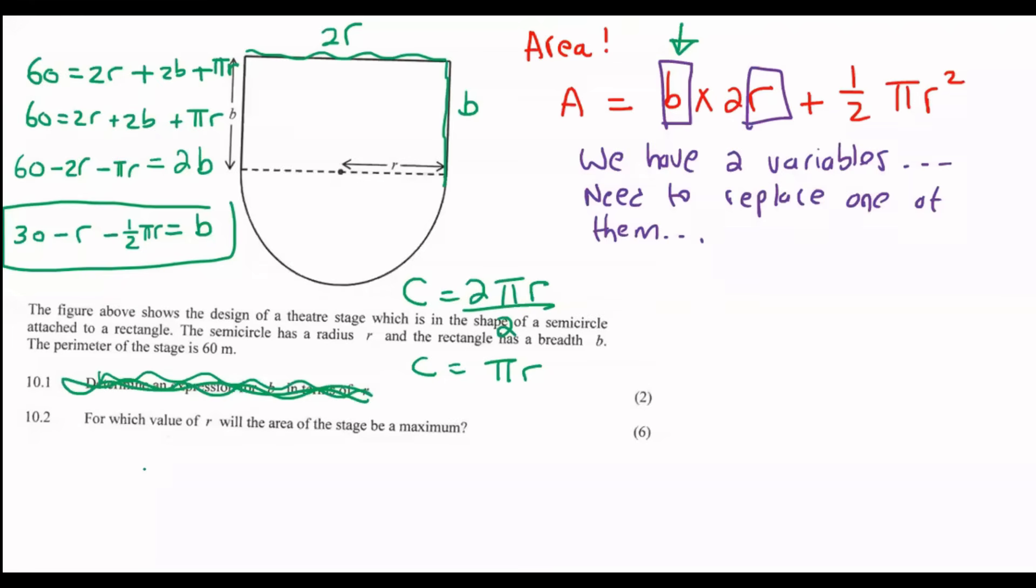So we can now say that A equals whatever B is, which is going to be (30 - R - ½πR) times 2R, plus ½πR². Now what you do is just simplify a little bit. I'm going to multiply the 2R in. So that's going to be 60R - 2R² - πR², because the half and the two cancel out, plus ½πR².